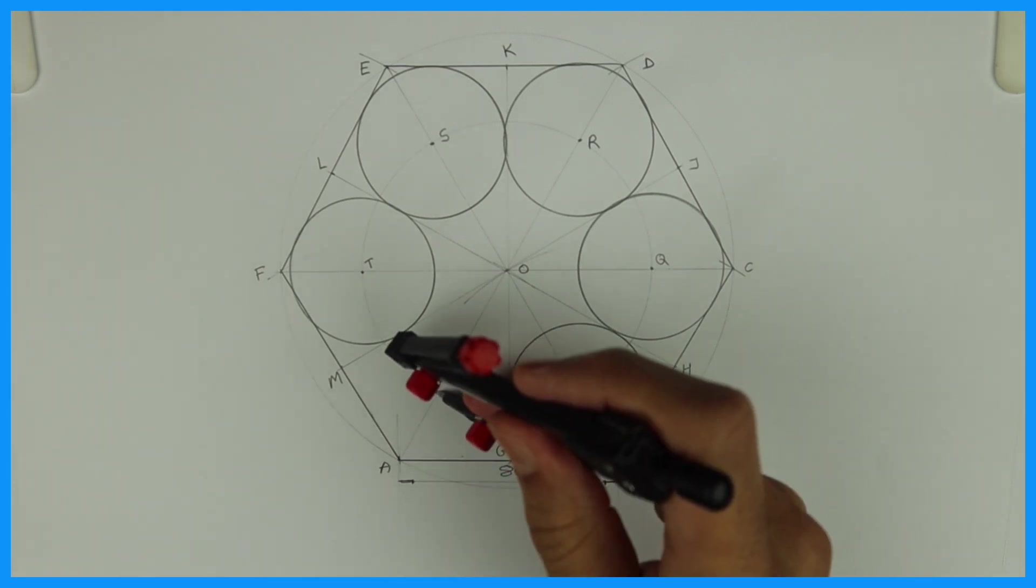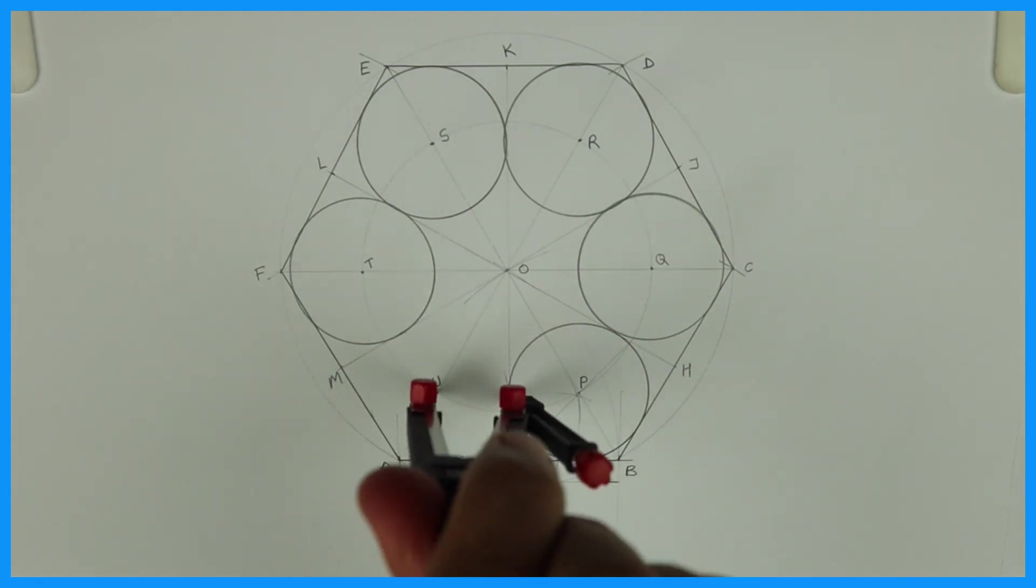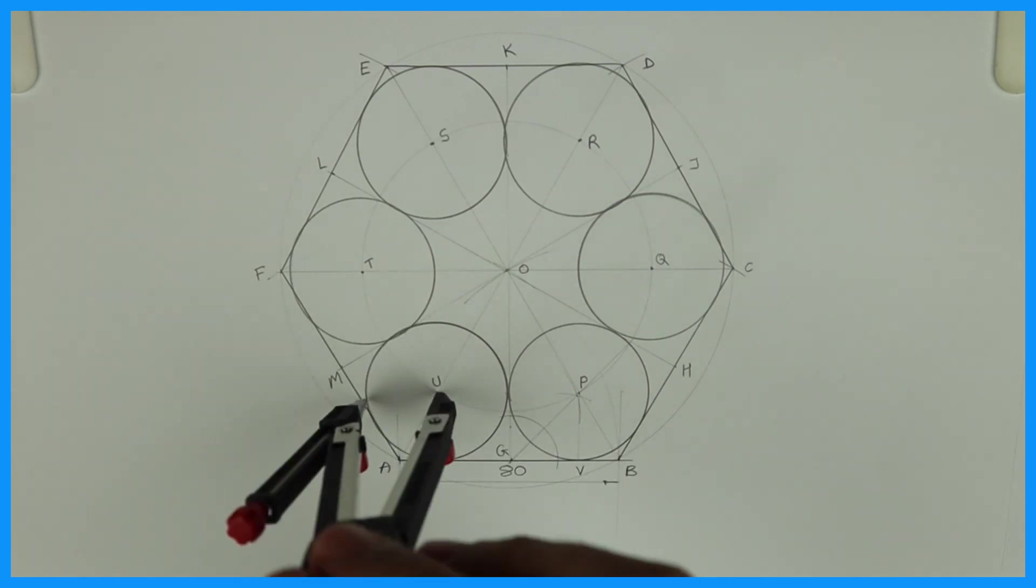So we got six equal circles inside a hexagon, each touching two sides. Thank you.